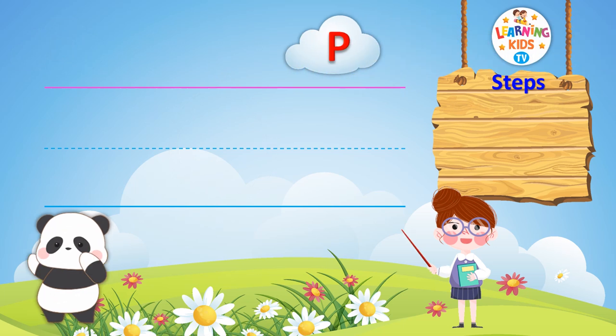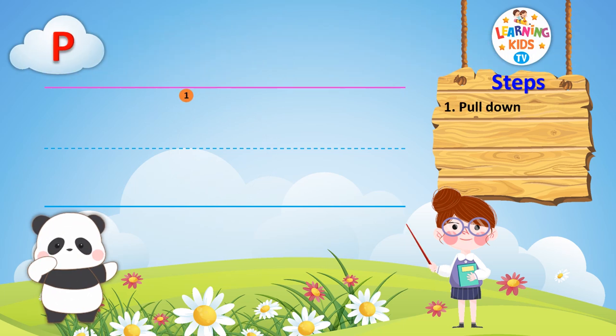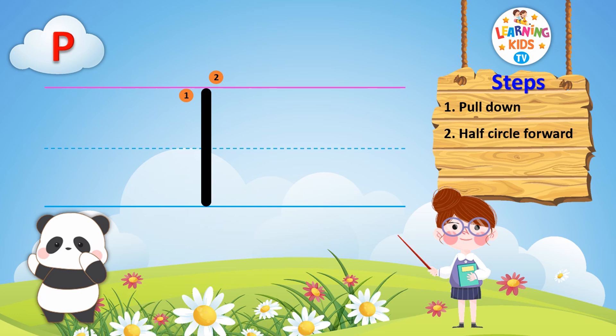Learn to write uppercase letter P. Step 1: pull down. Step 2: half circle forward.